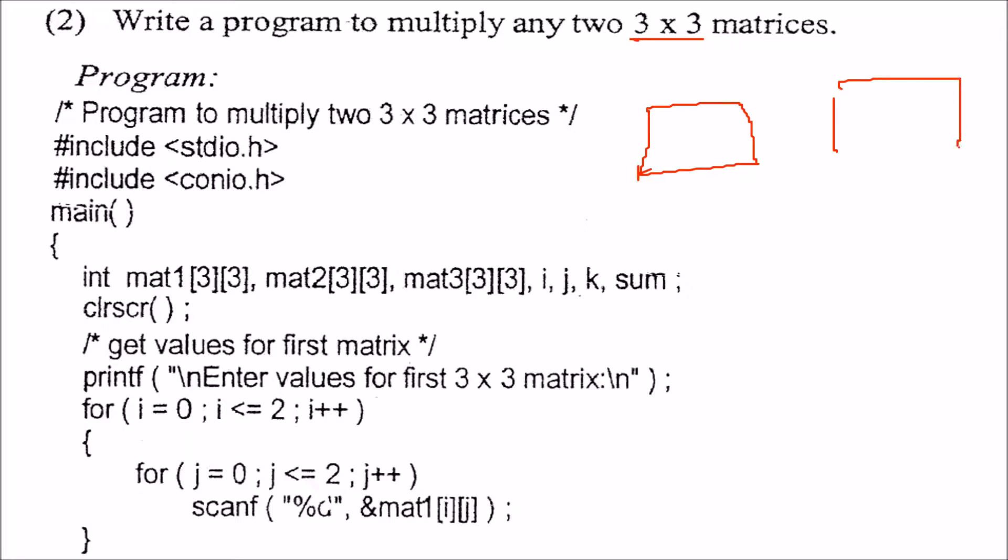If I have two matrices, in multiplication of matrix, I have 1, 2, 5, 1, 2, 1, 0, 1.